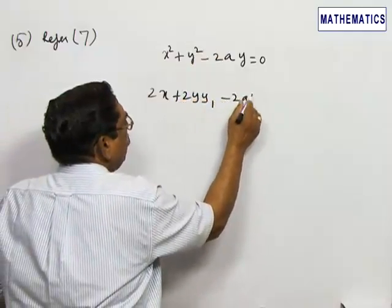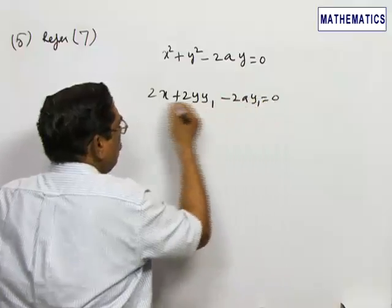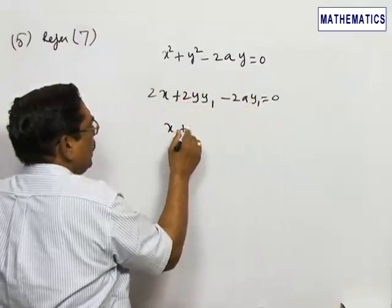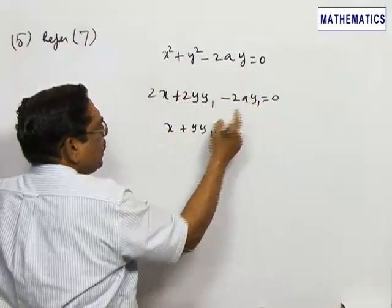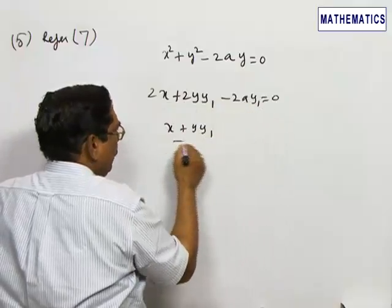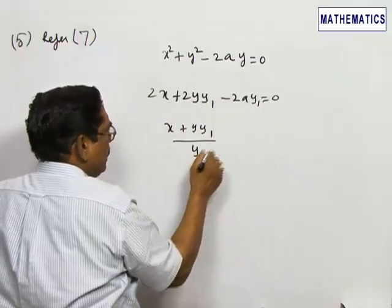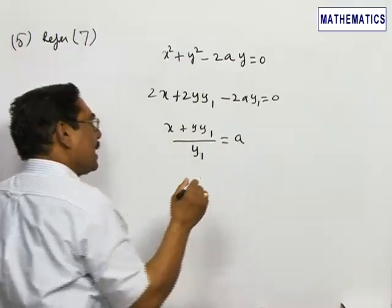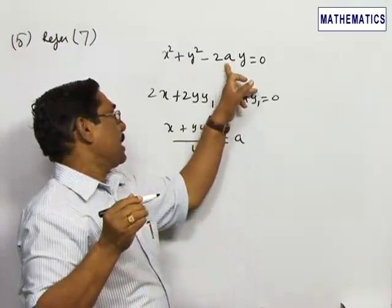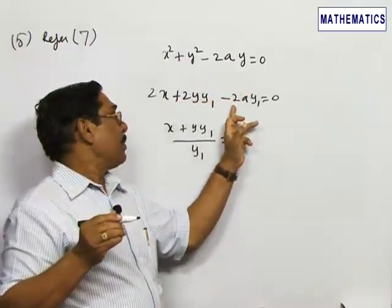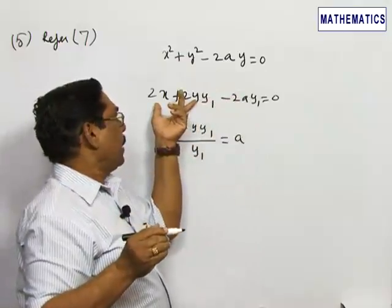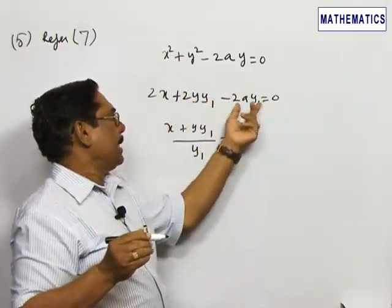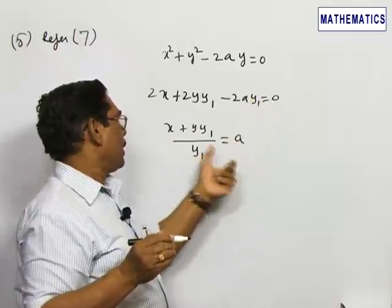I remove the 2. x plus yy1, I take it to the other side, divided by y1 is equal to a. Because I want to get rid of this a in this equation. So find the value of a from here. I removed 2, taking to the other side ay1 will be there, therefore a will be equal to so much.